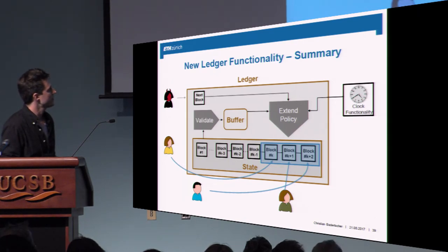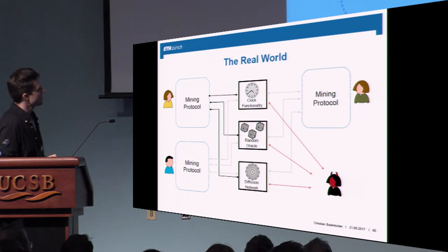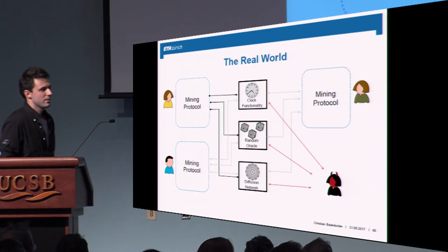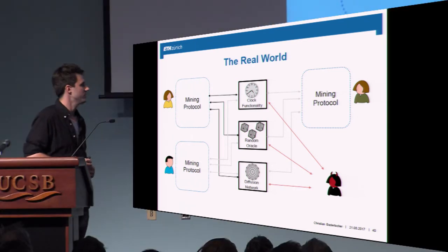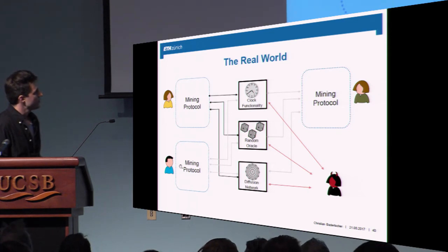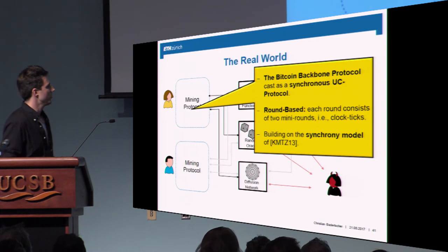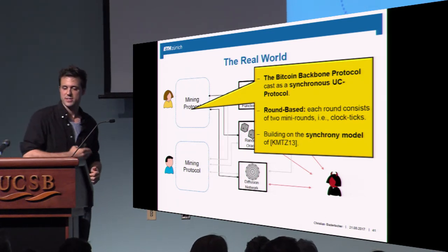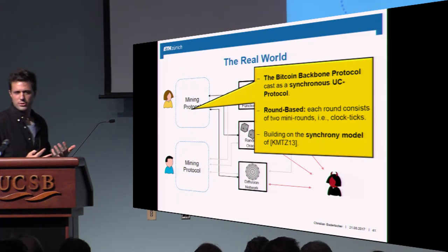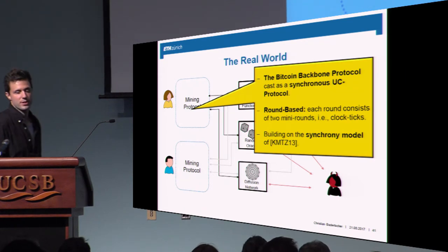That's the summary of our ledger functionality. To realize it, the usual suspects are assumed as hybrid functionalities: a clock, the random oracle, and the diffusion network — not a broadcast network, but an ad hoc network where you can implement a multicast on top of it. What we first did was cast the backbone protocol as a synchronous UC protocol, following the synchrony model by Katz et al. The protocol proceeds in rounds, and each round we have to do a proof of work step, fetch information about the longest chain, what transactions came up, and so on.